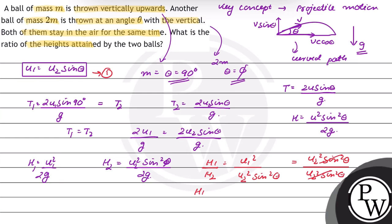So the ratio H1 / H2 = 1:1. The ratio of the heights attained by the two balls is 1:1. Hope you understood this well, best of luck.